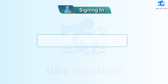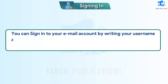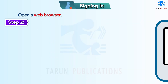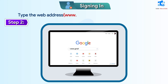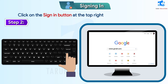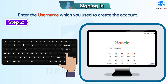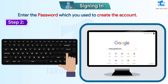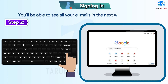Signing in. You can sign in to your email account by entering your username and password. Follow these steps to sign in: Step 1 – Open a web browser. Step 2 – Type the web address www.gmail.com in the address bar and press the Enter key. Step 3 – Click on the Sign In button at the top right corner of the screen. Step 4 – Enter the username which you used to create the account. Step 5 – Click on the Next button. Step 6 – Enter the password which you used to create the account. You will be able to see all your emails in the next window.